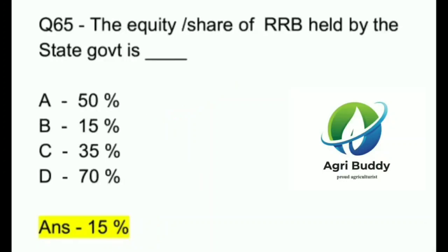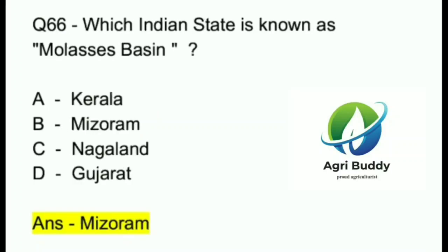Question 65. The equity share of RRB held by state government is? A. 50%. B. 15%. C. 35%. D. 70%. And the answer is 15%.